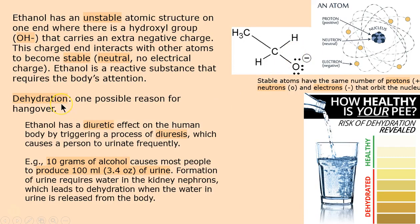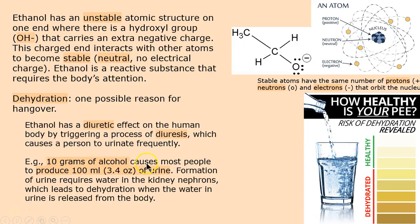Dehydration is a big part of the story, because how healthy is your pee? We're going to find that out. Diuretic is when we have to urinate frequently. Diuresis is the process. And that is what alcohol does to us — I think most of us know that. But let's look at the numbers: 10 grams of alcohol is not that much, but it makes you pee 100 milliliters of urine. And that is a lot.